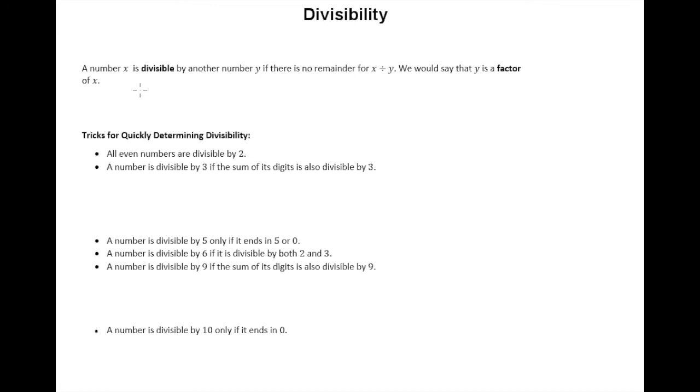In that case we would say that y is a factor of x. So one thing we can definitely say as an example is 12 is divisible by 3. We can also say that 3 is a factor of 12. And the reason we can say both of these things is because 12 divided by 3 equals 4. There is no remainder there.